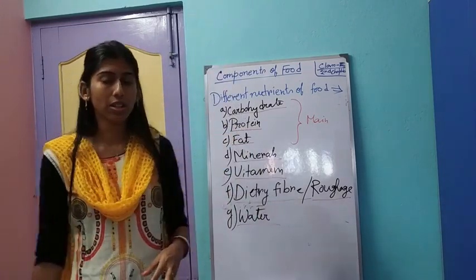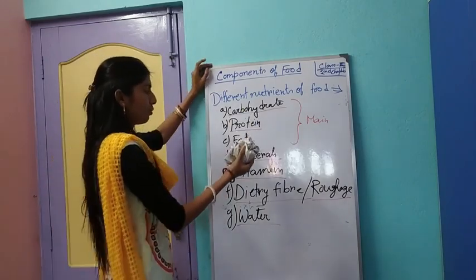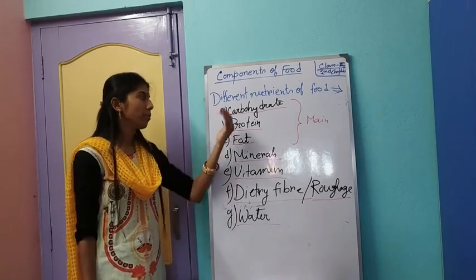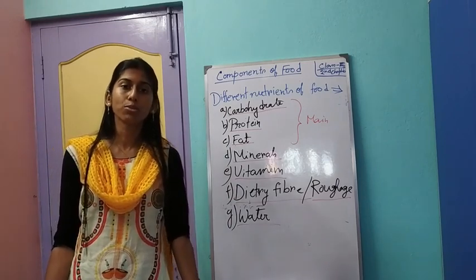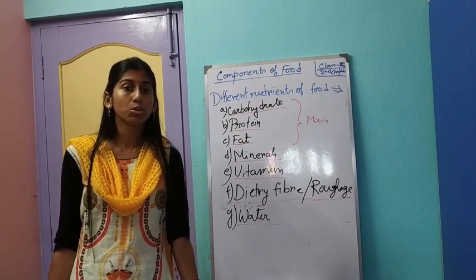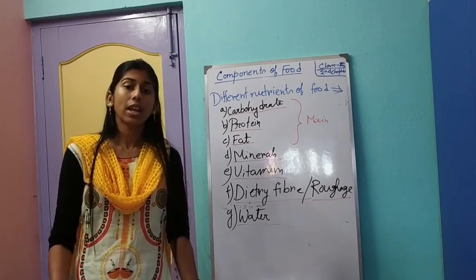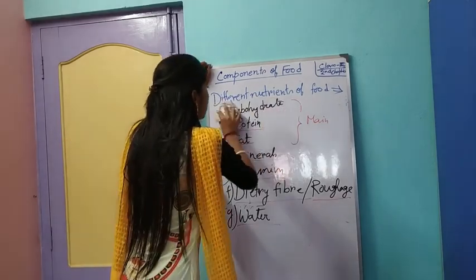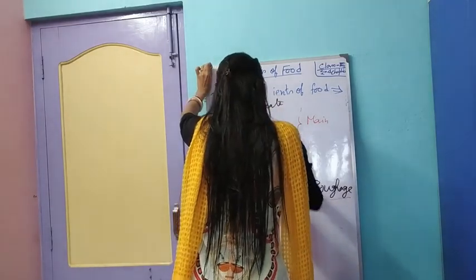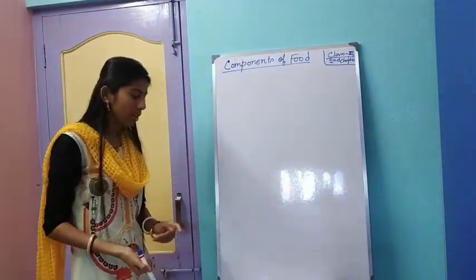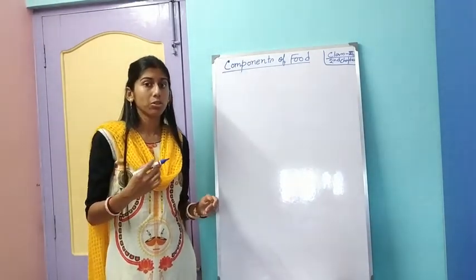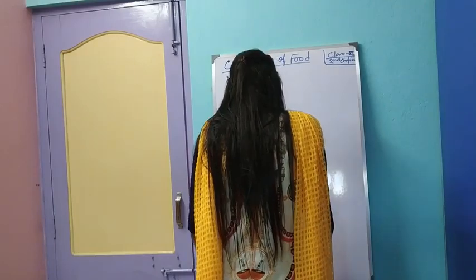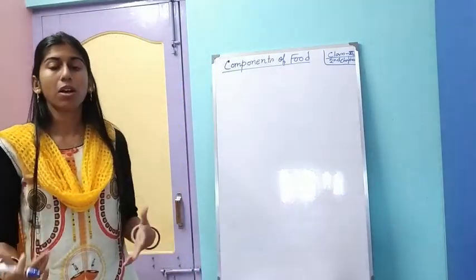Now, how do we know that carbohydrate, protein, or fat is present in our food? There are experiments by which we can prove this. First we need to know what carbohydrate is. Carbohydrate is a component of food in which carbon, hydrogen, and sugar are present. There are different forms of carbohydrate like sugars, glucose, sucrose, starch, and cellulose, which come from plants.